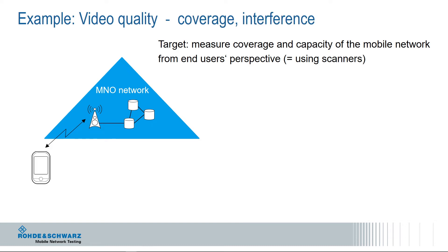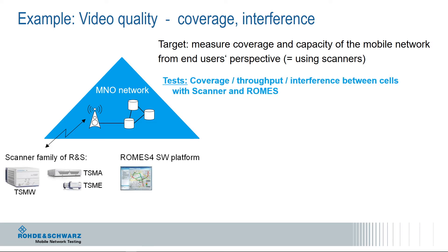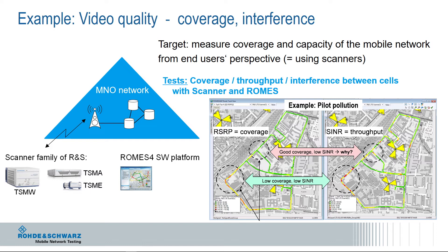Another strategy is using a network scanner for evaluating the performance of the MNO network. Coverage and throughput can be measured by the scanner family of Rohde & Schwarz. Interference issues can be identified and solved — this is already troubleshooting. A low signal-to-noise and interference ratio combined with low data throughput in a good coverage area is a performance issue, and the scanner together with our network optimization software ROMAS will give you the root cause, such as pilot pollution. This was the upper part of the triangle — the quality of the network.